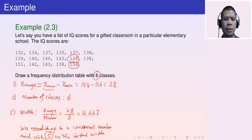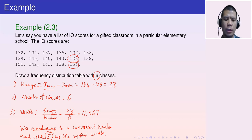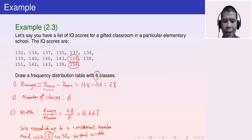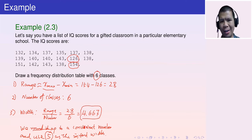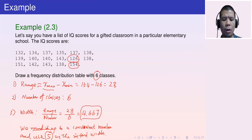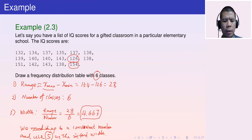Why not use 10 instead of 5? Using 10 would be more than double the ratio of 4.667, which is too far away. The chosen width must be close to the ratio, so we cannot use 10 here. We use 5 as the interval width.